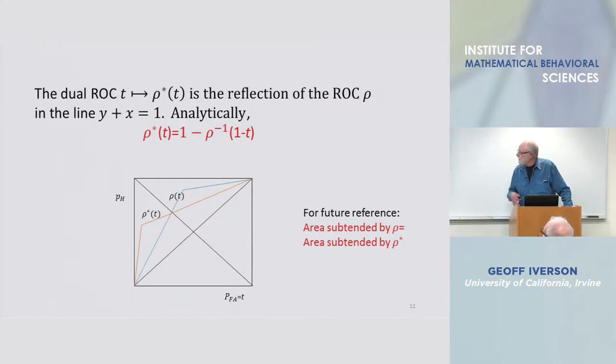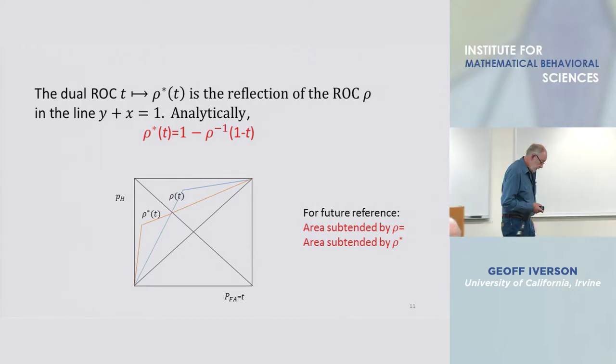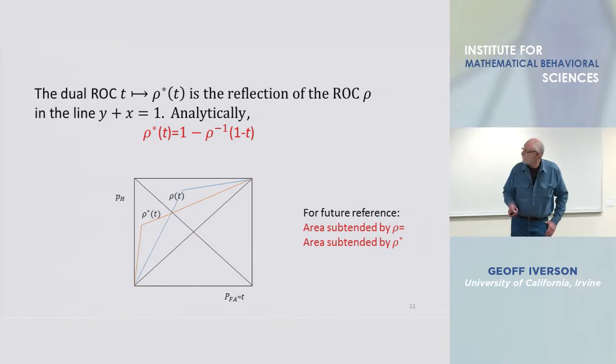And you can see that the orange curve is indeed the reflection of rho, and just for future reference notice,